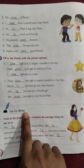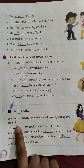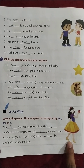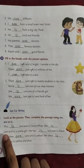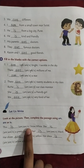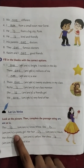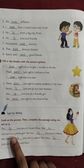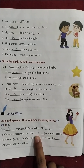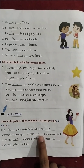Let us write. Look at the picture, then complete the passage using am, are or is. यह picture है एक Disney Princess Snow White का. अब हम blanks fill करते हैं. This dash snow white — am, are, is — This is Snow White. She dash a pretty girl — am, are, is — She is a pretty girl. Her hair dash blank — am, are, is — Her hair is black.